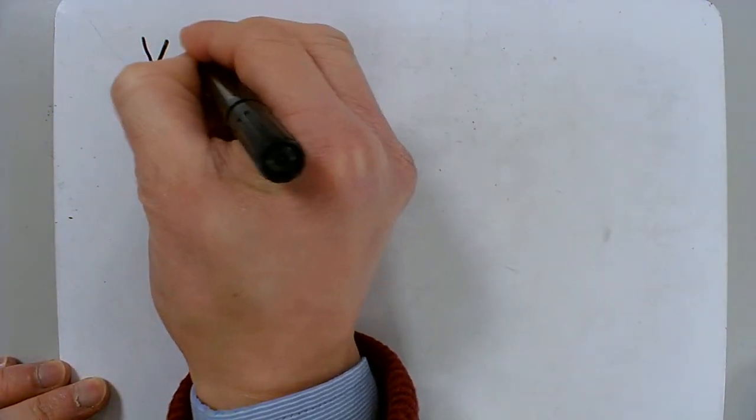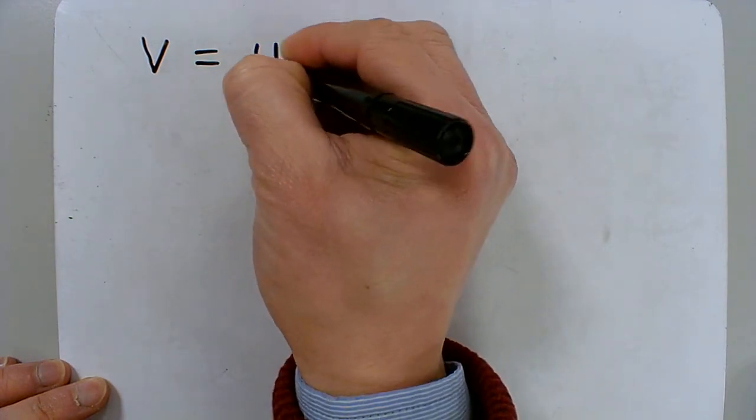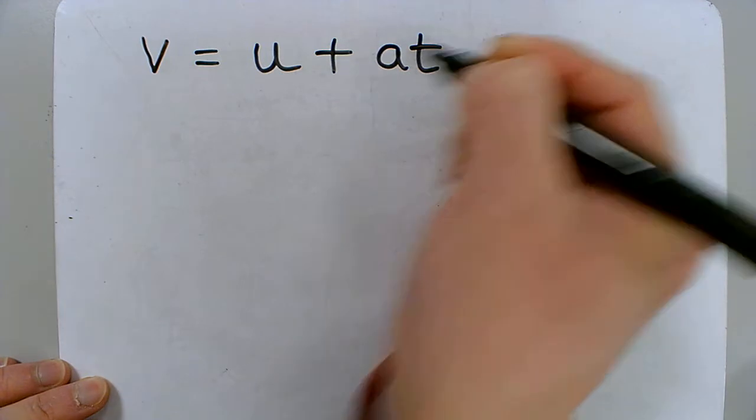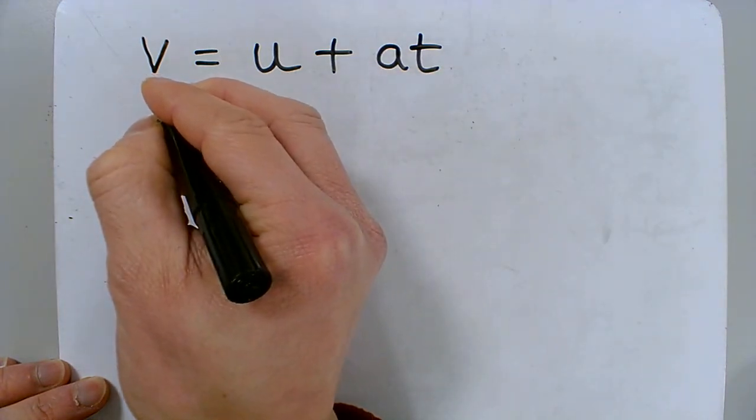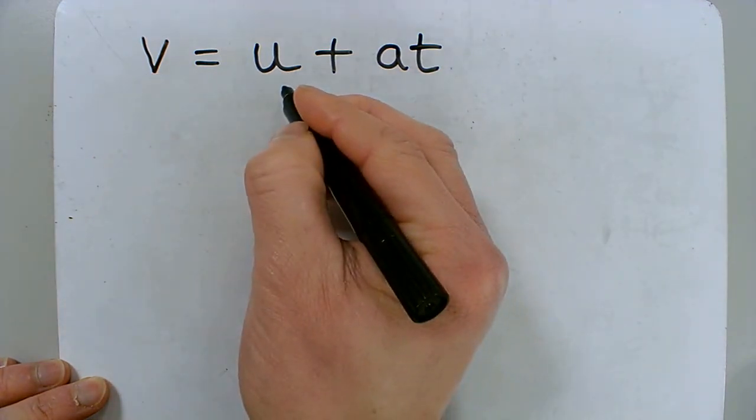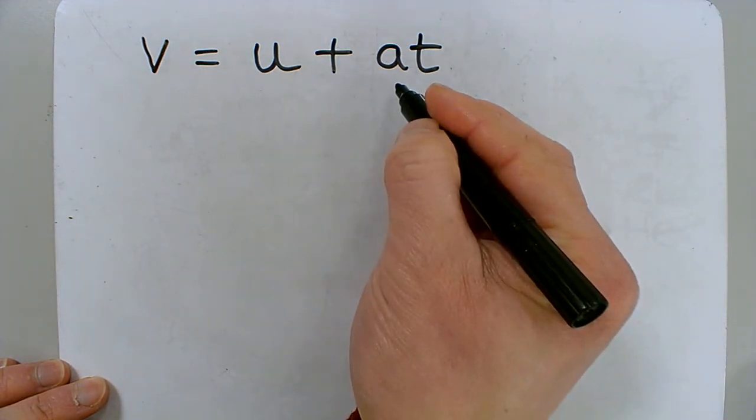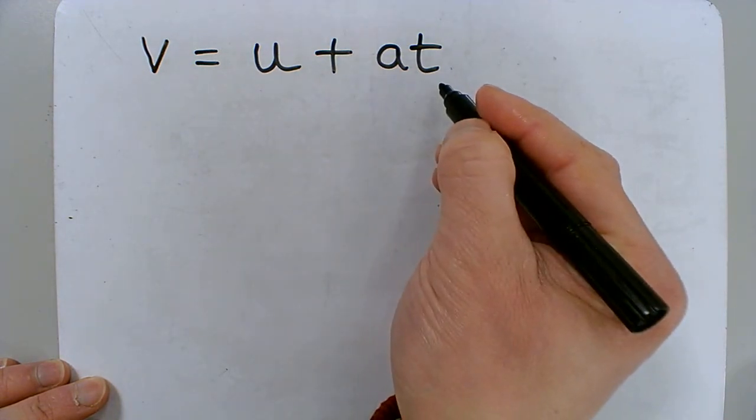And the first one that we're going to start with is v equals u plus at, where v is the final velocity, u is the initial velocity, a is the acceleration, and t is the time.